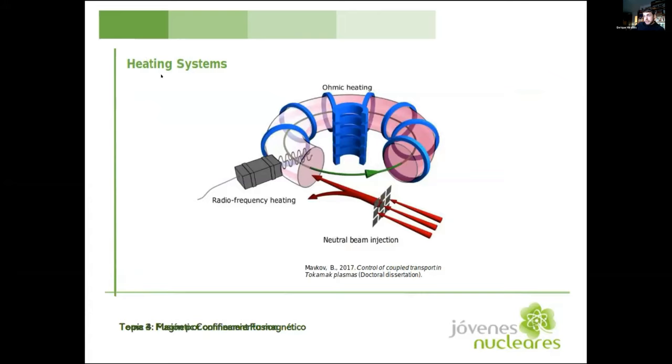So what are the main systems of a fusion reactor? I want to talk first about the heating systems. How do we heat the plasma? There are three main methods. Two of them are common for tokamaks and stellarators, but the ohmic heating is not available for stellarators because the ohmic heating is basically the plasma current. The current that goes through the plasma heats the plasma itself because of the conduction losses, the Joule effect. But because stellarators don't have this central solenoid and this plasma current, then we don't have ohmic heating.